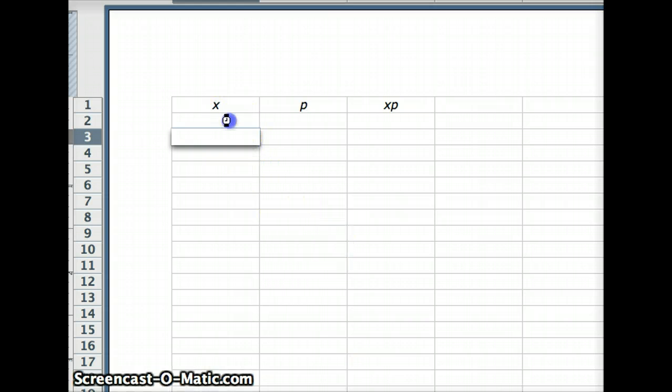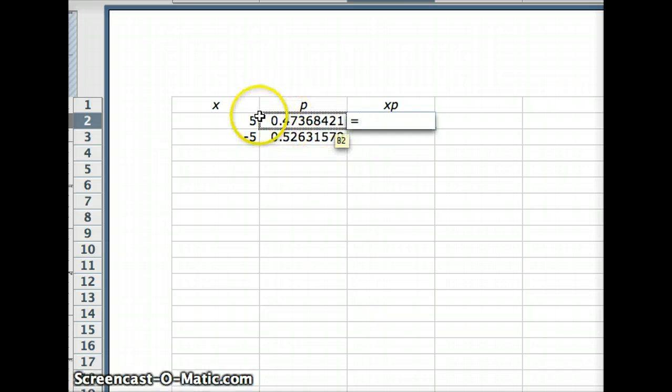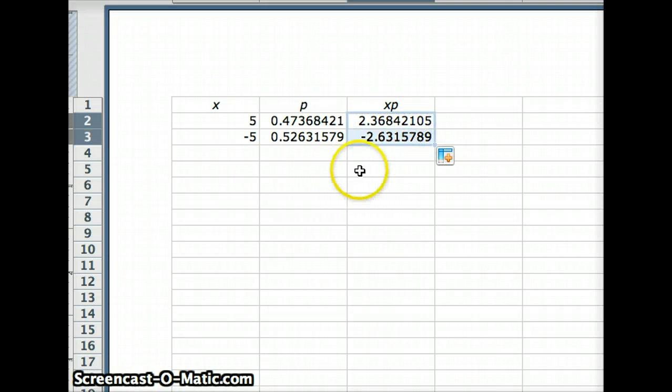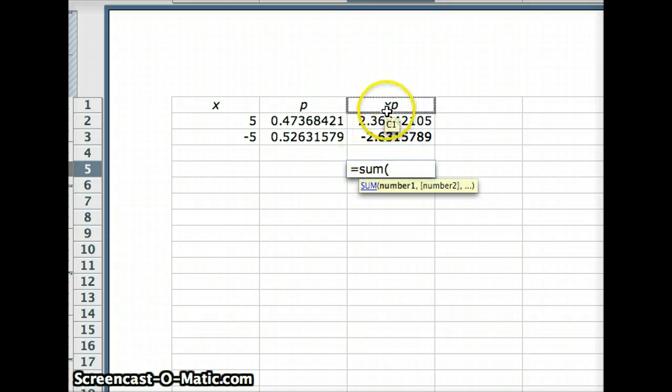We either win $5 or we lose $5. The probability for winning $5 is 18 out of 38. The probability for losing $5 is 20 out of 38. XP requires us to multiply those together, and if we sum those up, that will give us our expected value.